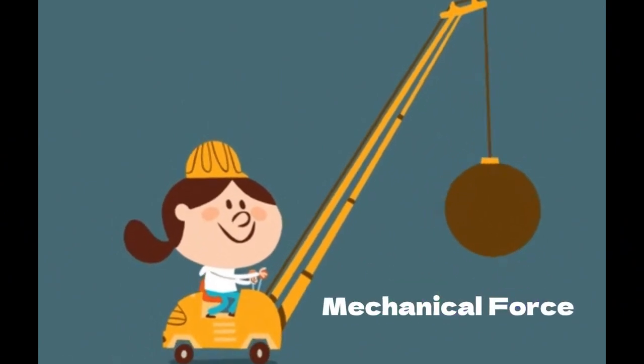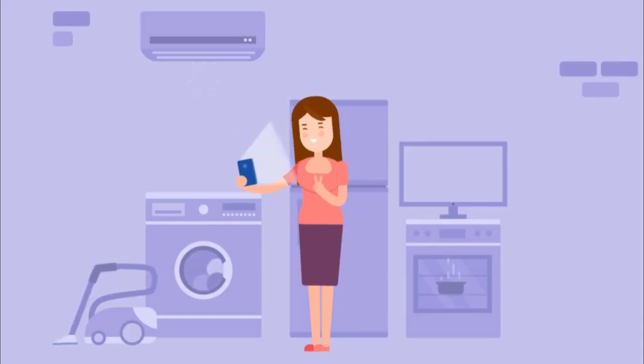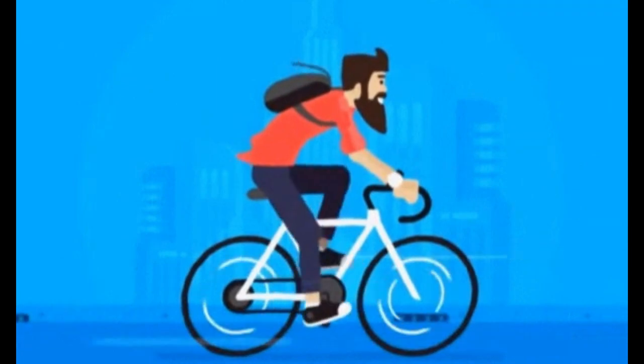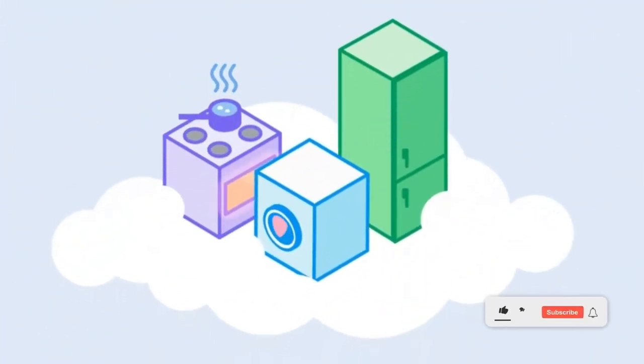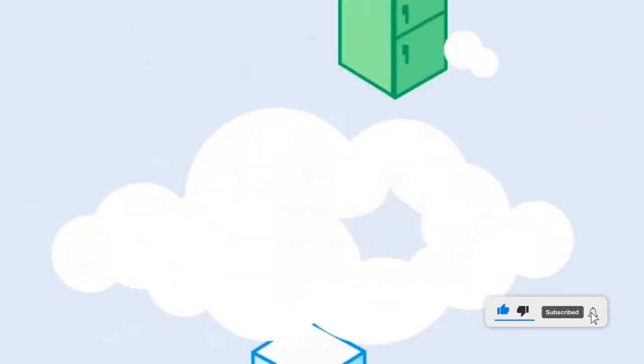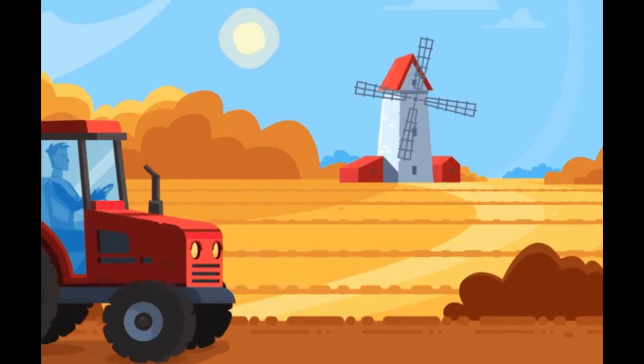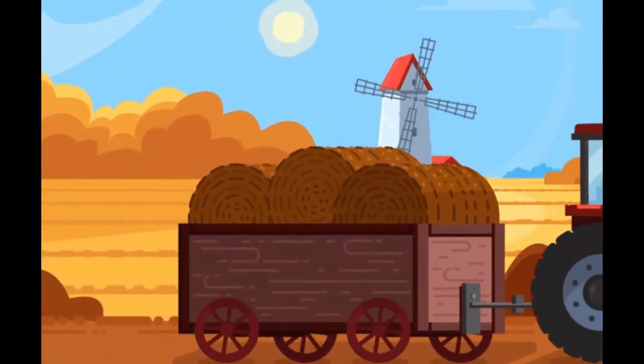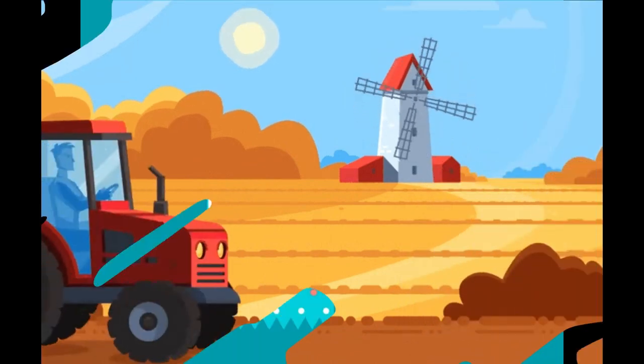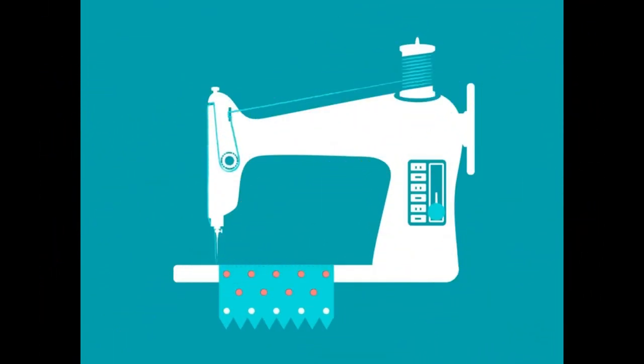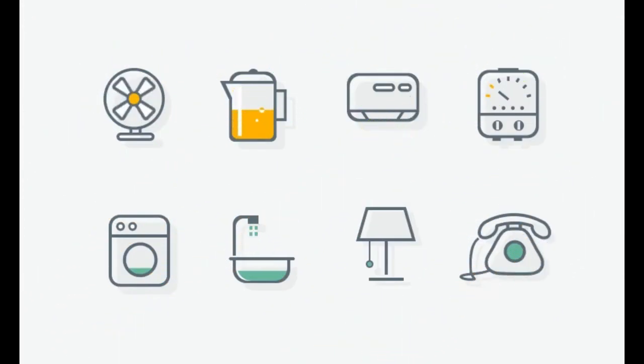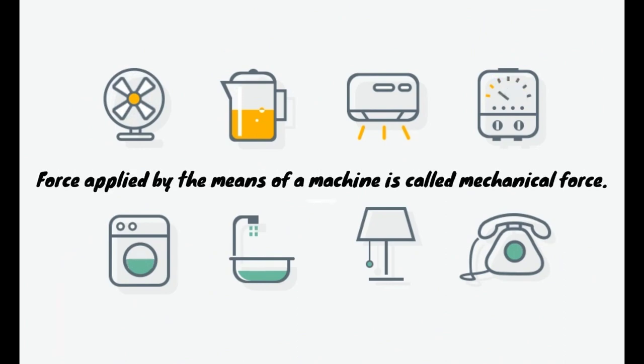Mechanical force. We use different machines for doing many tasks. Muscular force is used for running some machines. Some machines are run by using electricity or fuel. Machines like the latter are called automatic machines because a mechanical force is used here. For example, sewing machine, electric pump, washing machine, mixer, etc. The force applied by means of a machine is called mechanical force.